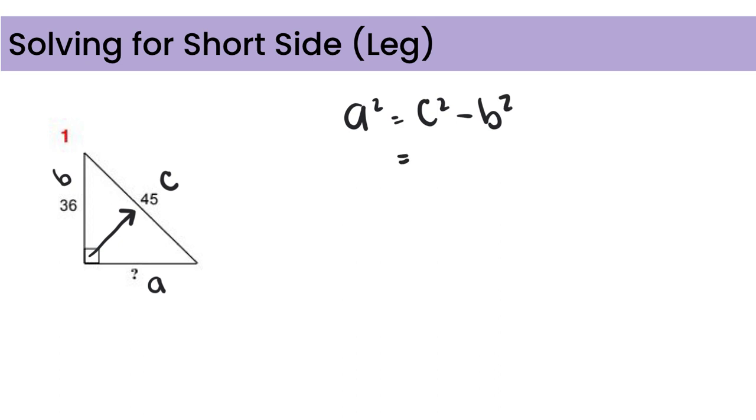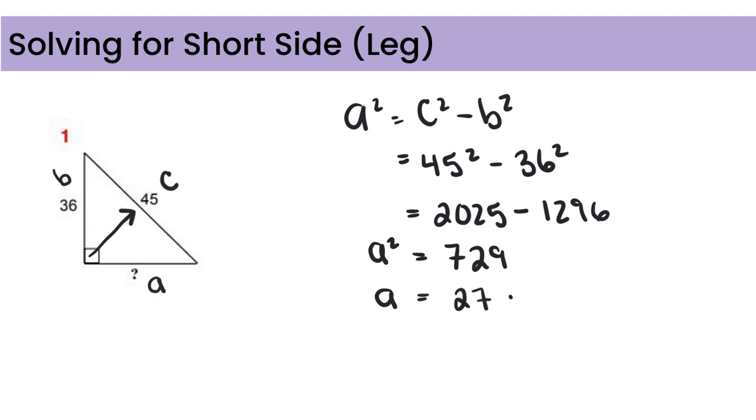In this case we have 45 squared minus 36 squared, which if we quickly do that in our calculators, 2025 minus 1296 to give us 729. And remember that's for A squared. And if we want A, we just want to take the square root, which is going to give us 27. Let's throw in our units there of meters just for good measure.